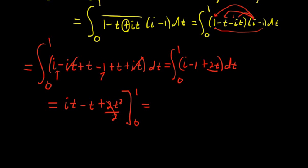When we plug in 1, we get i, because i times 1 is i, minus 1. And then t squared is just 1, because it's 1 squared. Subtract, plug in 0, it all goes away. So we just end up with i. And that's it.